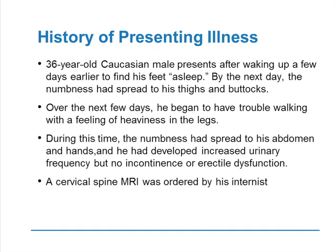Case one is a 36-year-old Caucasian man who presented after waking up to find that his foot was asleep — actually, both of them were asleep. By the next day, the numbness had spread to his thighs and buttocks. Over the next few days, he began to have trouble walking with a feeling of heaviness in his legs. He also noted that the numbness spread to his abdomen and hands, and he had developed urinary frequency, which he had never had before, with no incontinence and no erectile dysfunction. The change in bladder function was very alarming to him. A cervical spine MRI was ordered by his internist, and he was referred to a neurologist for further evaluation.